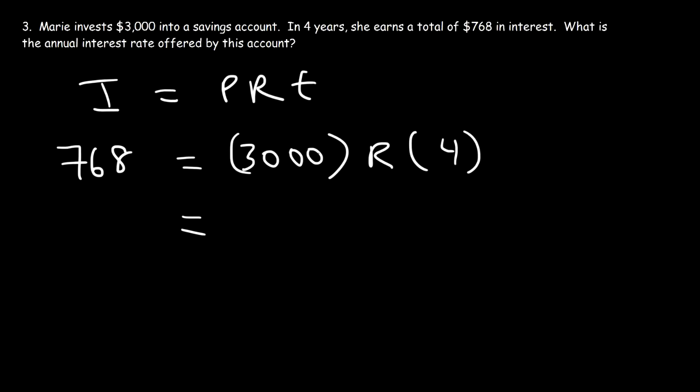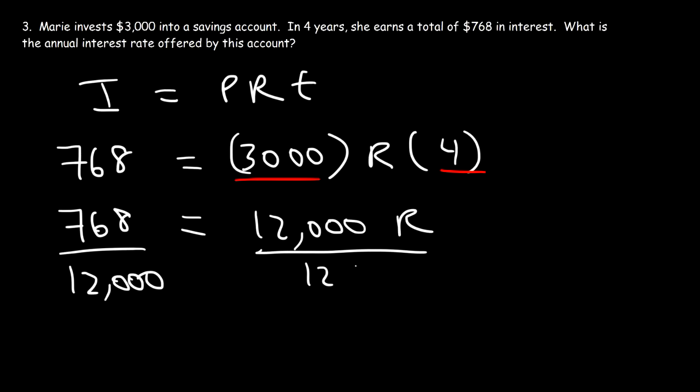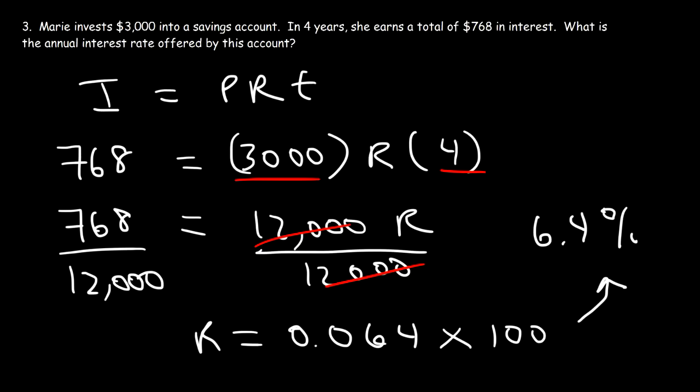So first, let's multiply 3,000 by 4. That's going to be about 12,000. Now the next thing that we need to do is divide both sides by 12,000 to isolate R. So R is going to be 768 divided by 12,000. So as a decimal, that's 0.064. To convert this into a percentage, multiply by 100. So the interest rate is about 6.4%. So that is the annual interest rate offered by this account.